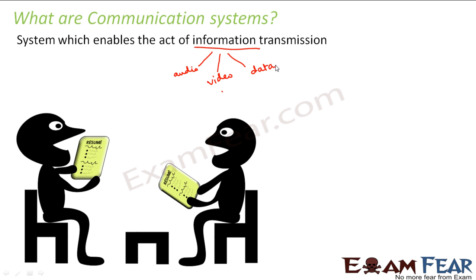So now the question is: how do these transfers take place? How does the transfer of data, audio, or video take place from one place to another? These two people are sitting just next to each other, so the other person can hear what the first person is speaking. But if the second person goes far away — say the first person is in Delhi and the second person goes to Bangalore — the second person won't be able to hear directly. But communication is still possible with the help of telephones and mobile phones, and also through chat on computers over the internet. So in this lesson we are going to see how the transfer of information takes place over larger distances.